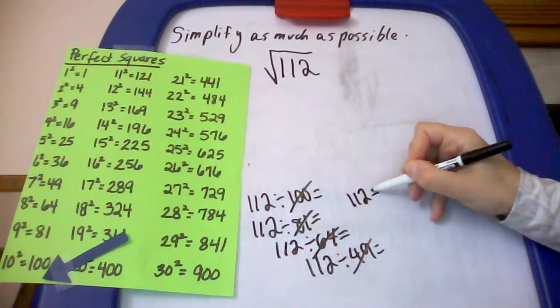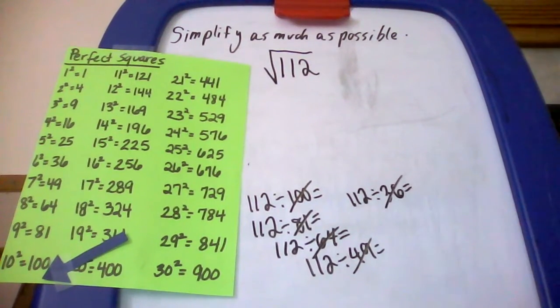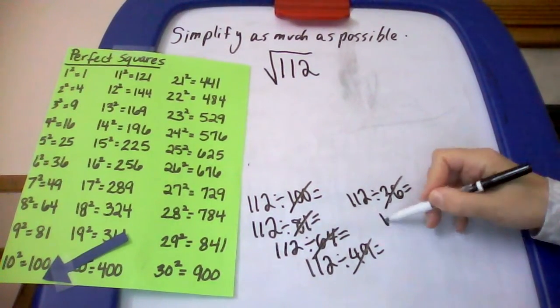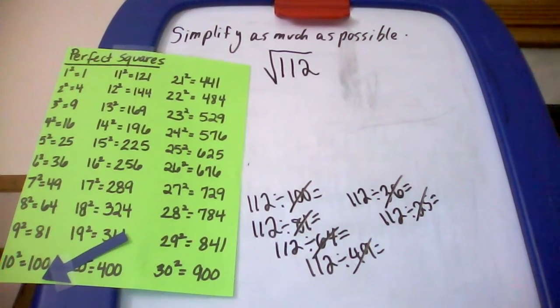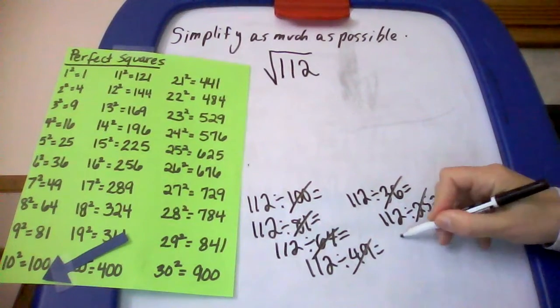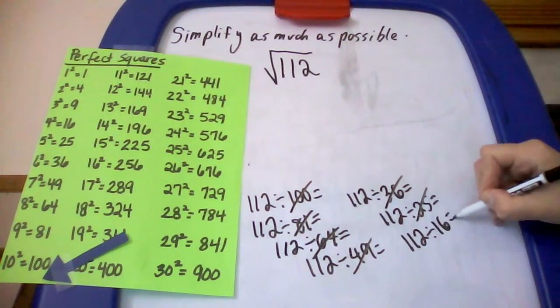So I'm going to go over to 36. 112 divided by 36. I do not get a whole number. I get a decimal number, so that's not a factor. Check 25 now. This one is a decimal number, so it's not a factor. Then I'm going to check 16. When I divide 112 by 16, I get 7.